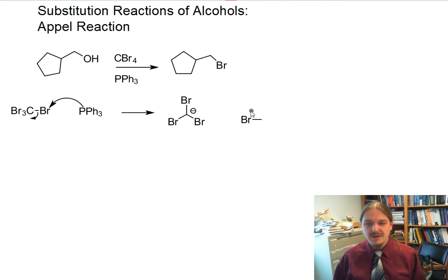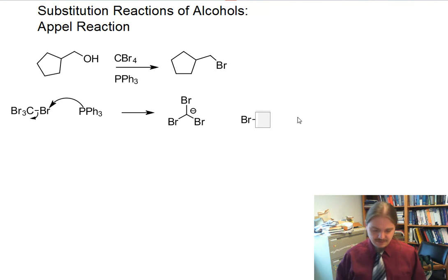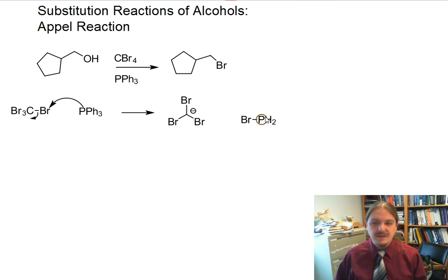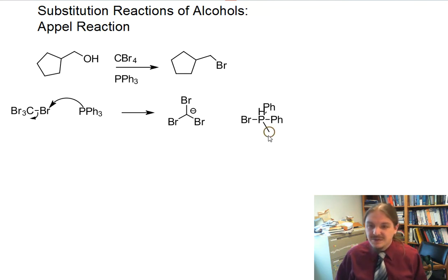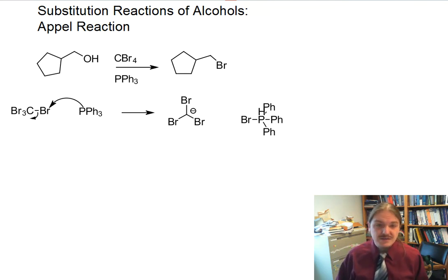The bromine atoms can stabilize the tribromomethyl anion a little through induction, but it's still actually a pretty good base, so it's going to be wanting to hang out there. Let me branch out on my phosphorus for a moment and put in all three phenyl groups, so it doesn't feel like I'm hiding anything on the structure of this phosphorus reagent. Because phosphorus used its lone pair to make this new bond, it has a positive charge.